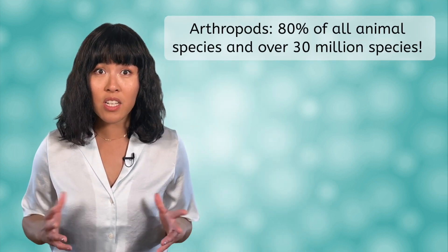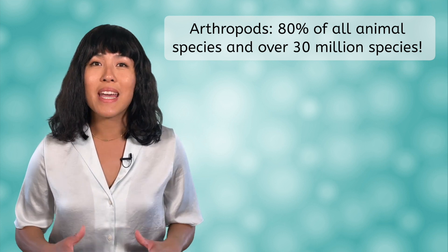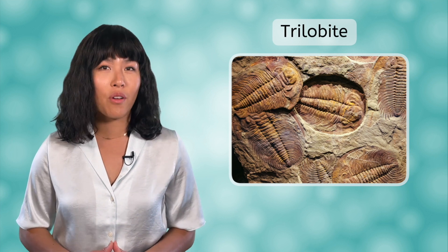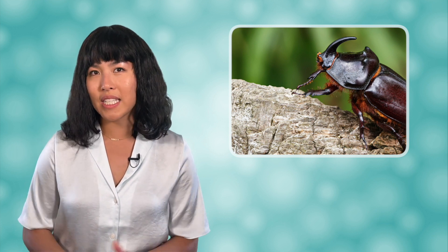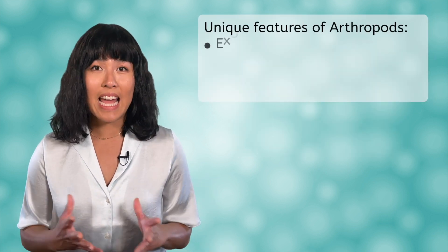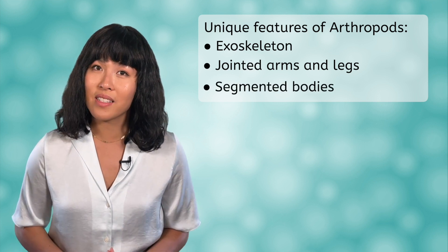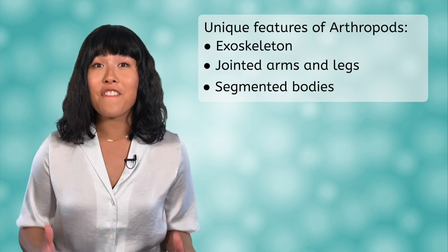We have reached the last phylum in our study of invertebrates: Arthropoda. Arthropods make up over 80% of all animal species, with over 30 million species, and they were the first animal species to make the adaptation onto land approximately 400 million years ago. A trilobite fossil approximately 500 million years old represents an ancient arthropod. Distinct characteristics include an exoskeleton — a hard shell made of the protein chitin — jointed appendages such as arms and legs, and segmented bodies. Features shared with other invertebrates include bilateral symmetry, a dorsal blood vessel, and a ventral nerve cord.